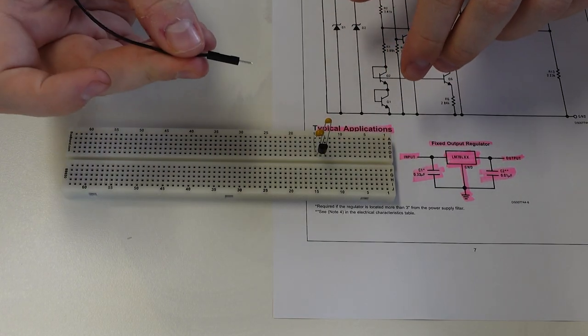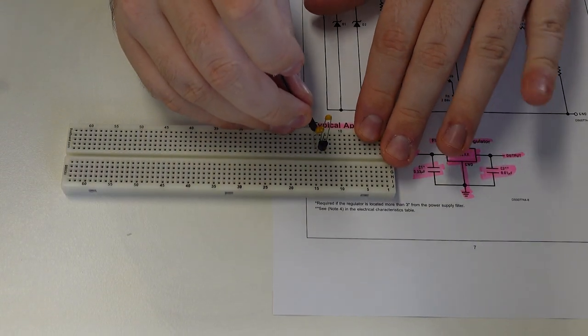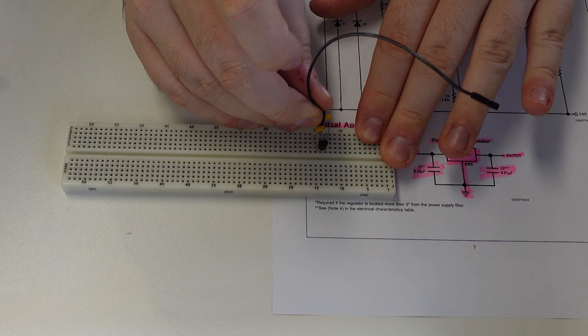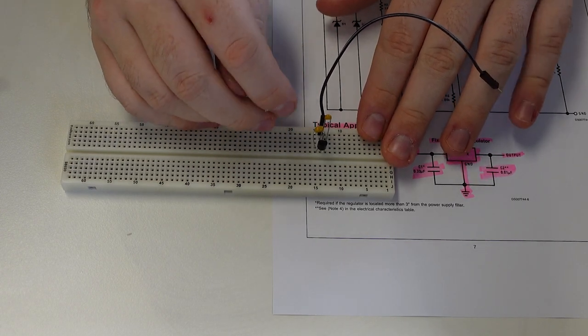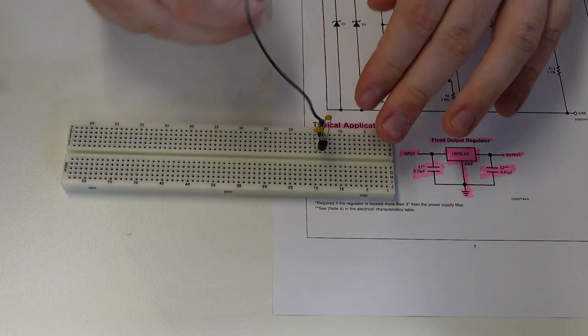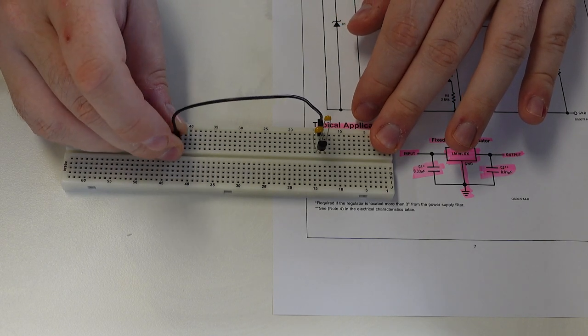The ground pin, I'm going to use this black wire. Black is usually the standard colour for ground. And that goes and connects to where all the other ground pins are, which is in the middle of the LDO. And for that, we're going to connect just further across the board, just like that.